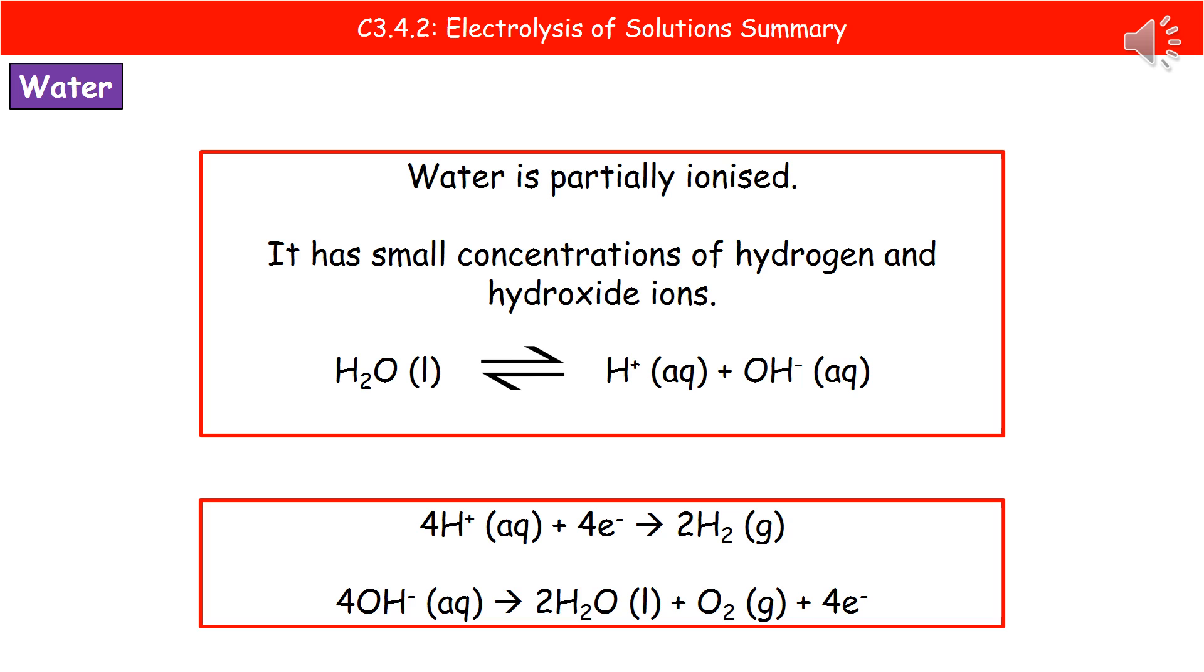Let's look at what happens when we carry out electrolysis on water. Water is a partially ionized substance, which means it has small concentrations of hydrogen ions and hydroxide ions present.